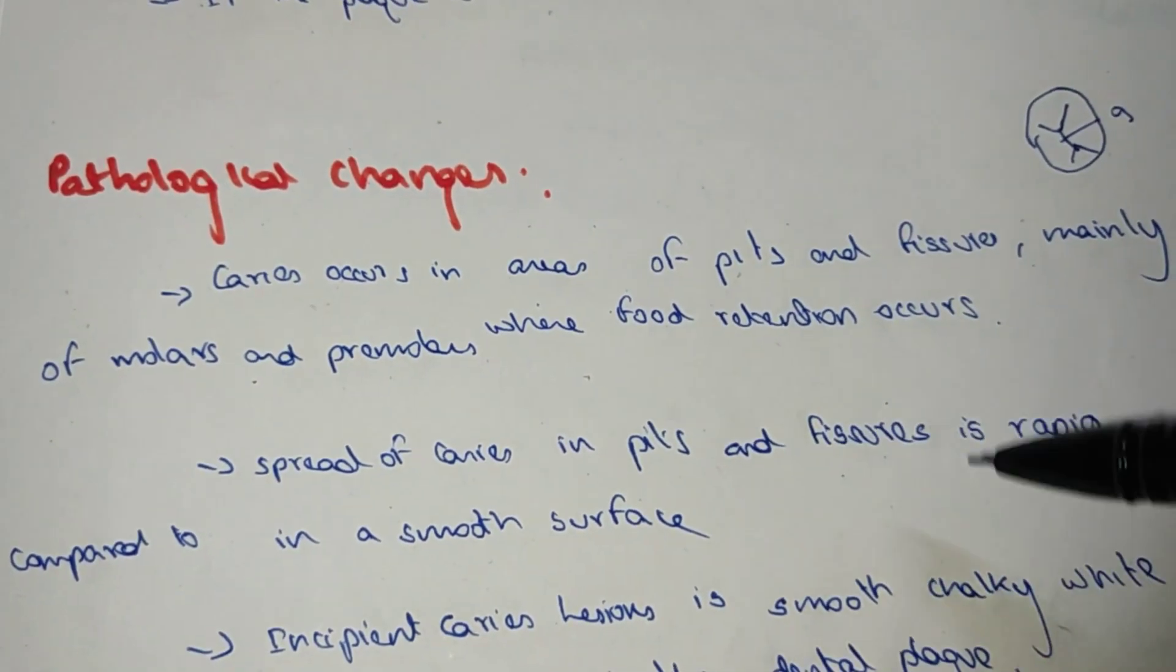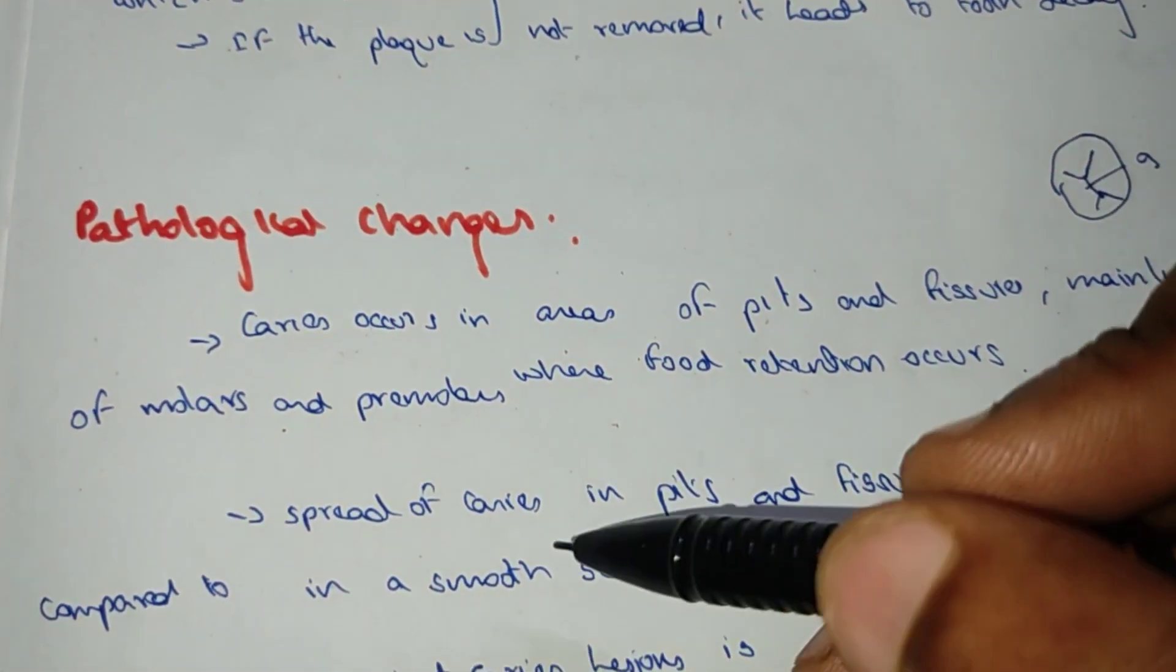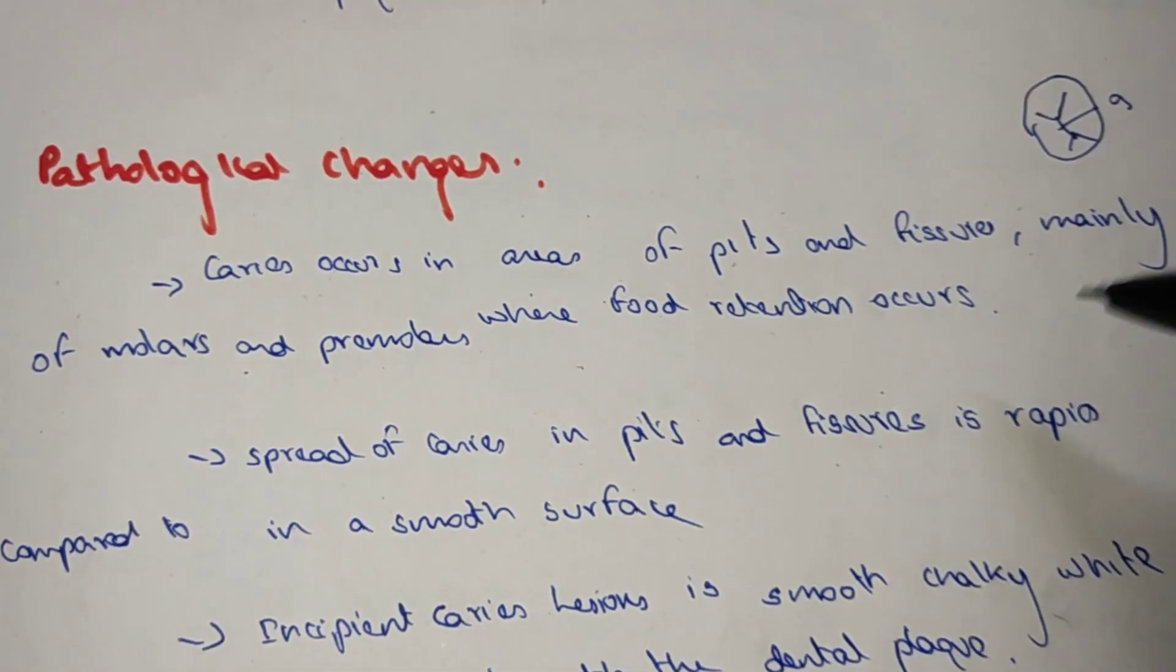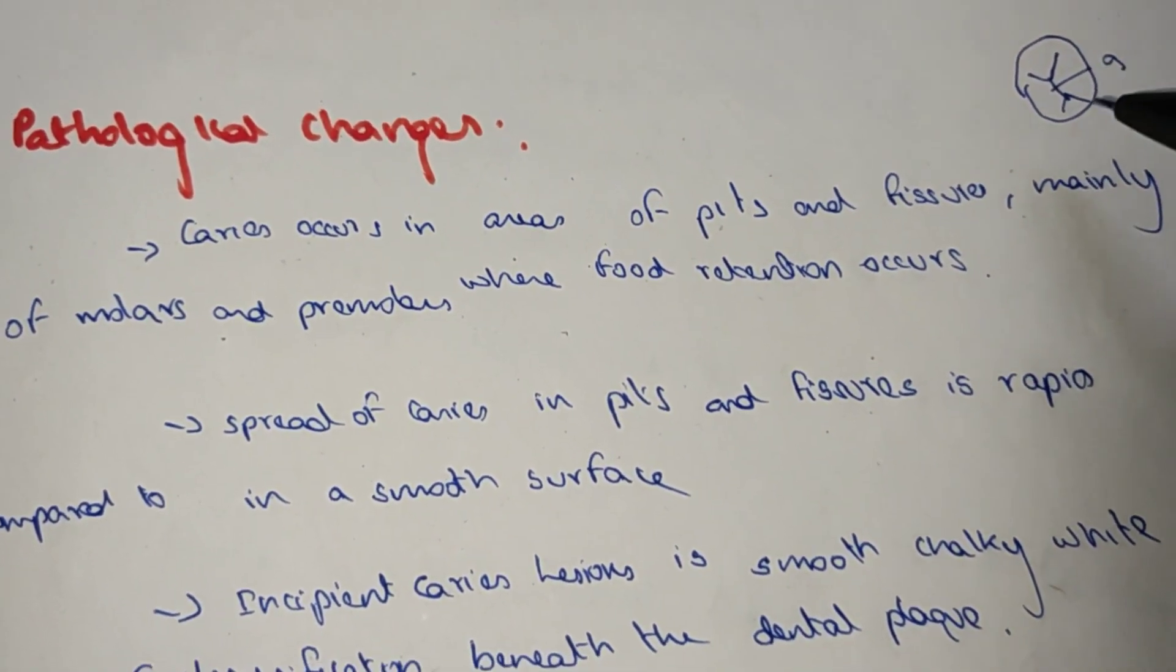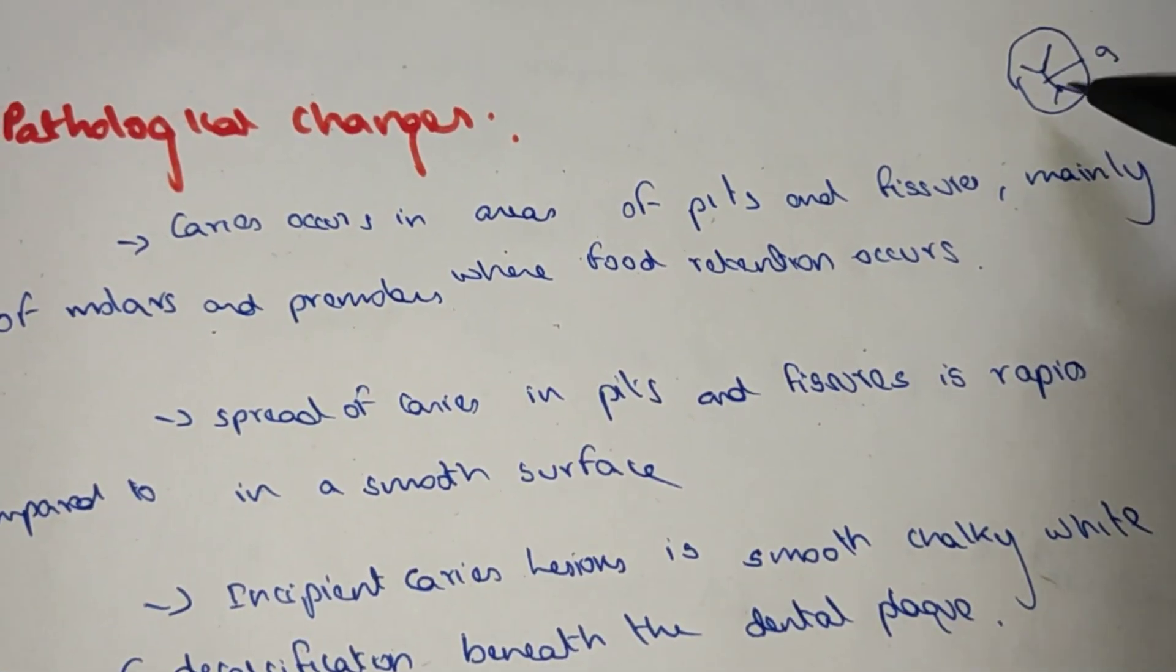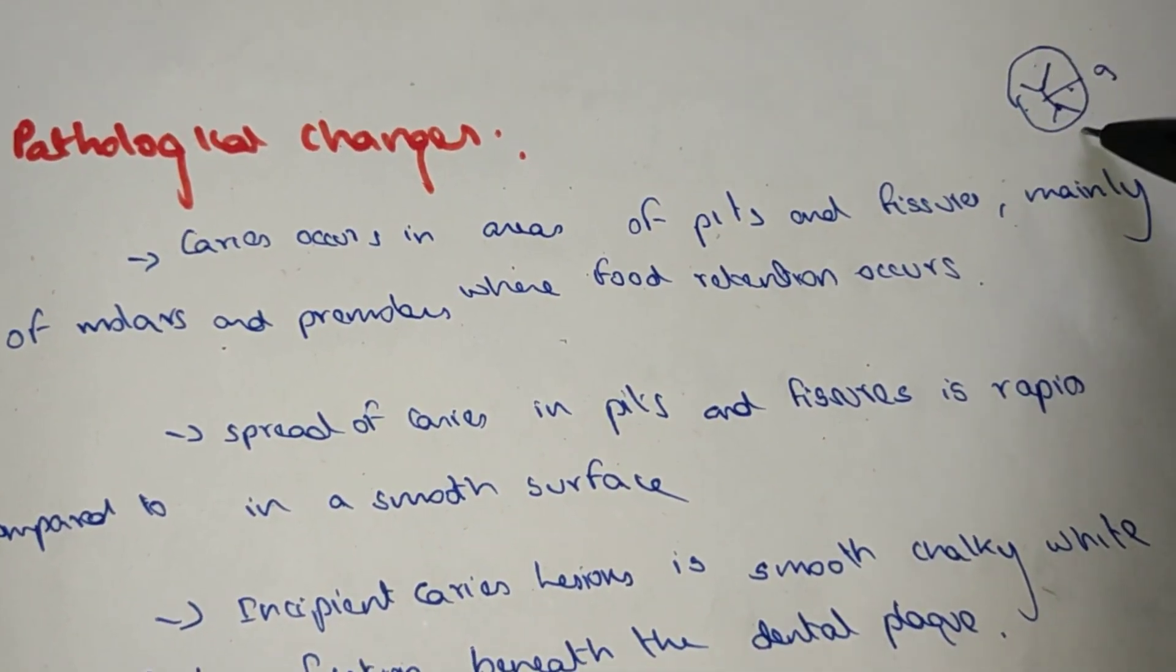Spread of caries in pits and fissures is rapid compared to smooth surfaces. With pits and fissures, the caries rate is very high.